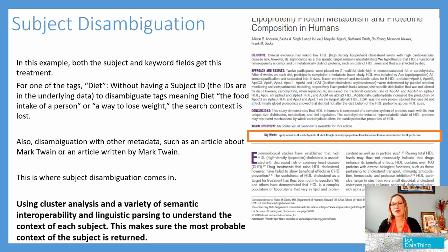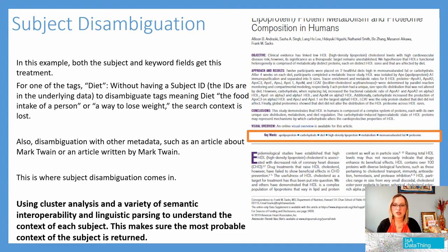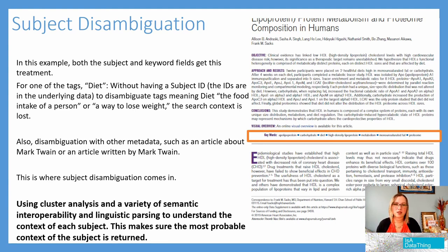Subject disambiguation is near and dear to all of us. One keyword tag might be 'diet' — but what kind of diet? Diet has a lot of different examples of context. Whether you are adding natural language topics or disambiguating subjects that previous indexers used, you really need to understand that context. Machines are really good at helping you do that. You first have to give it lots of training material to understand the difference between one version of 'diet' and another. But ultimately, once it understands — and that's where you have to test it — it can really help you with that disambiguation.